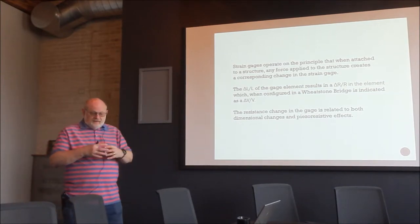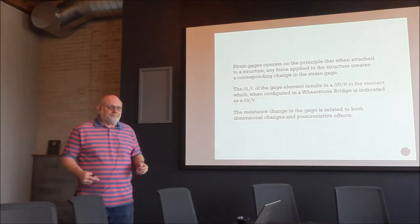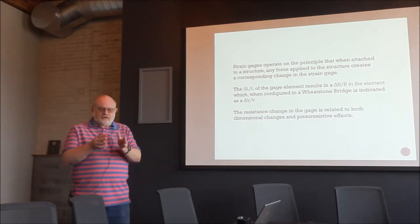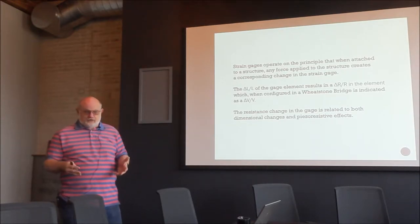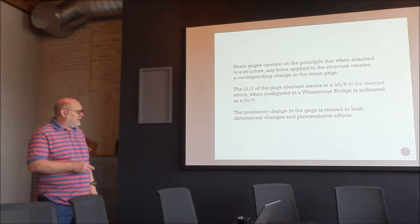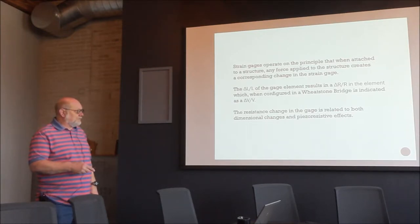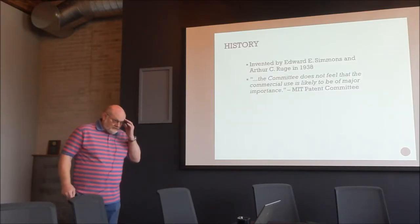Strain gauges operate on the principle that when attached to a device, any deformation in the device causes a corresponding deformation in the gauge, which produces a change in resistance. We're really measuring ΔL/L — change in length over length — as a change in resistance over resistance. In a Wheatstone bridge, that gives a voltage offset corresponding to strain.